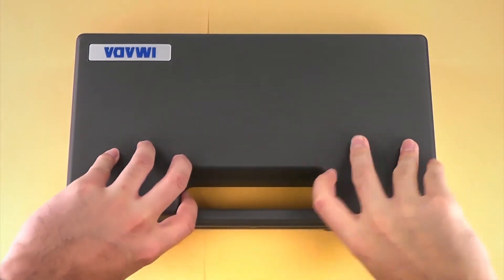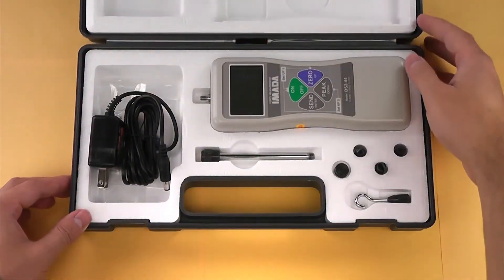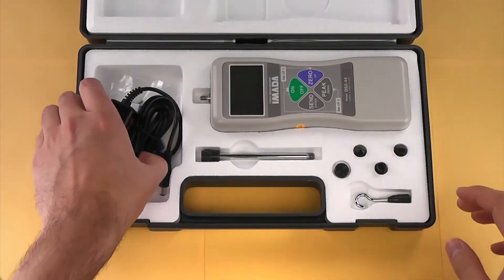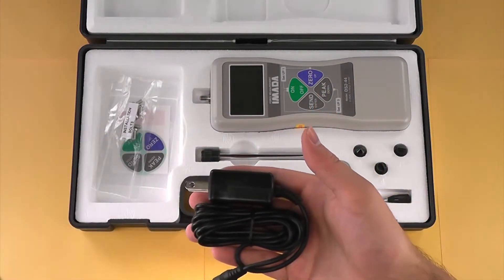The DS2 force gauge kit includes a number of accessories and attachments. This is the AC adapter and charger for the gauge.